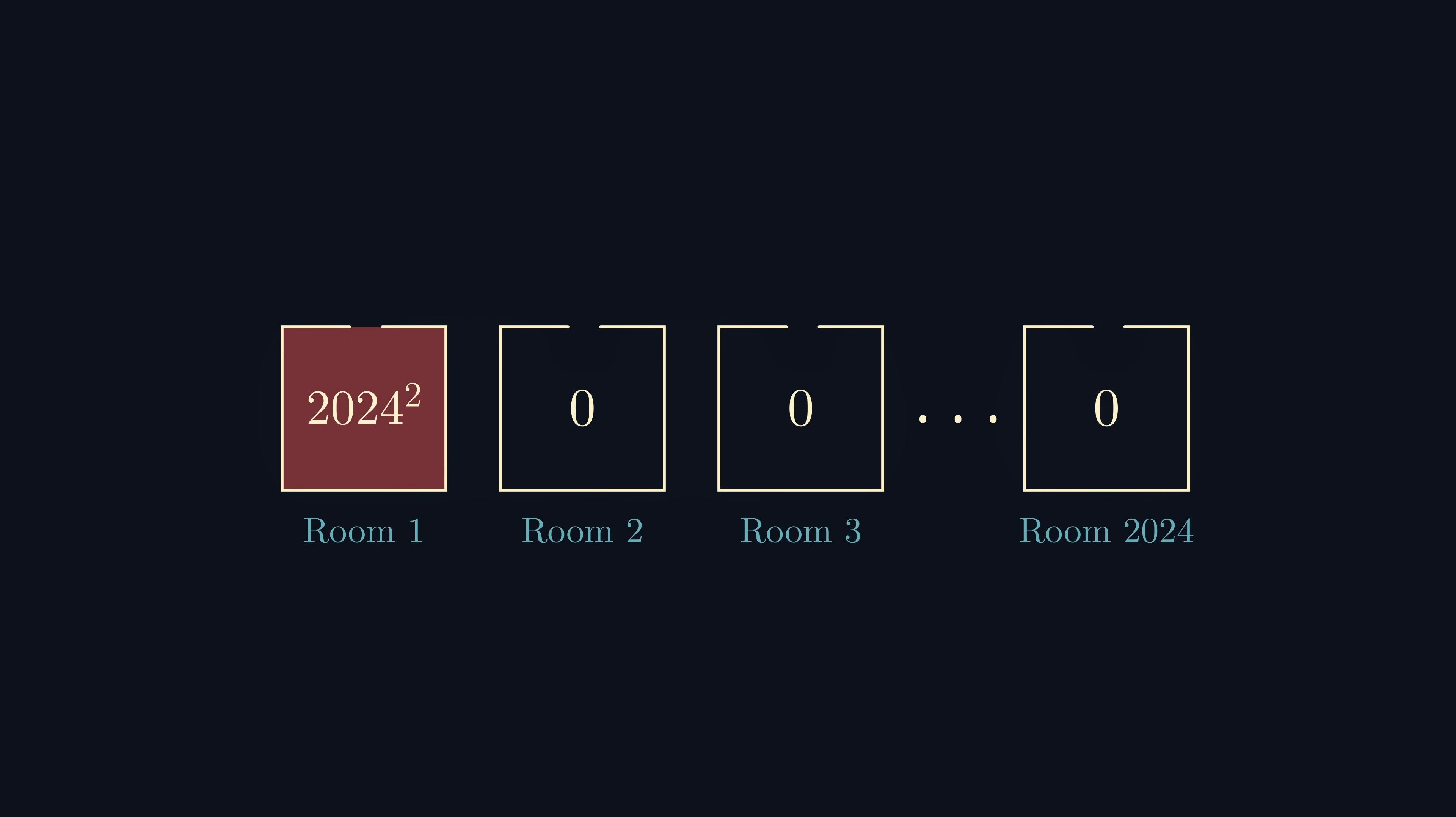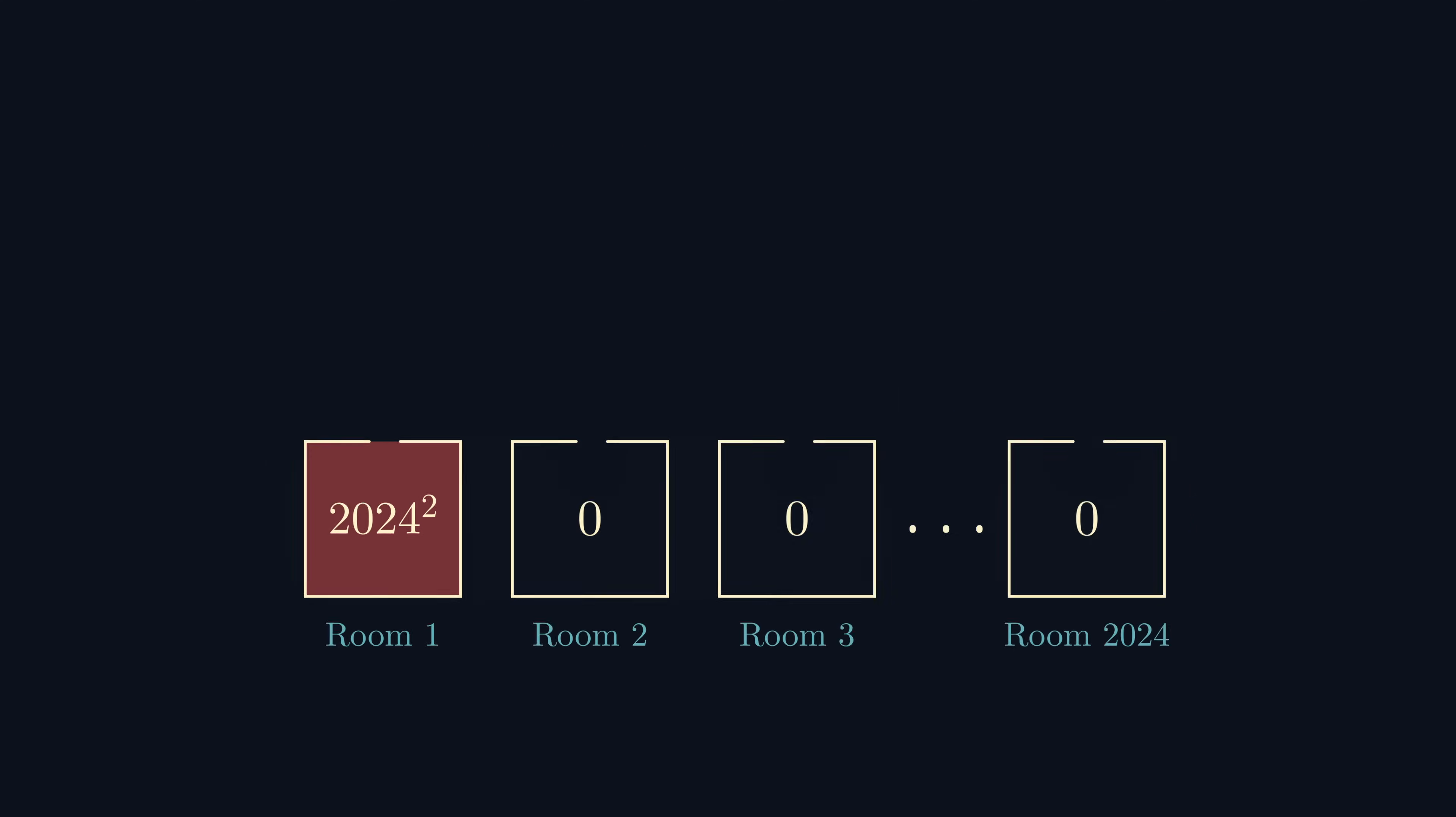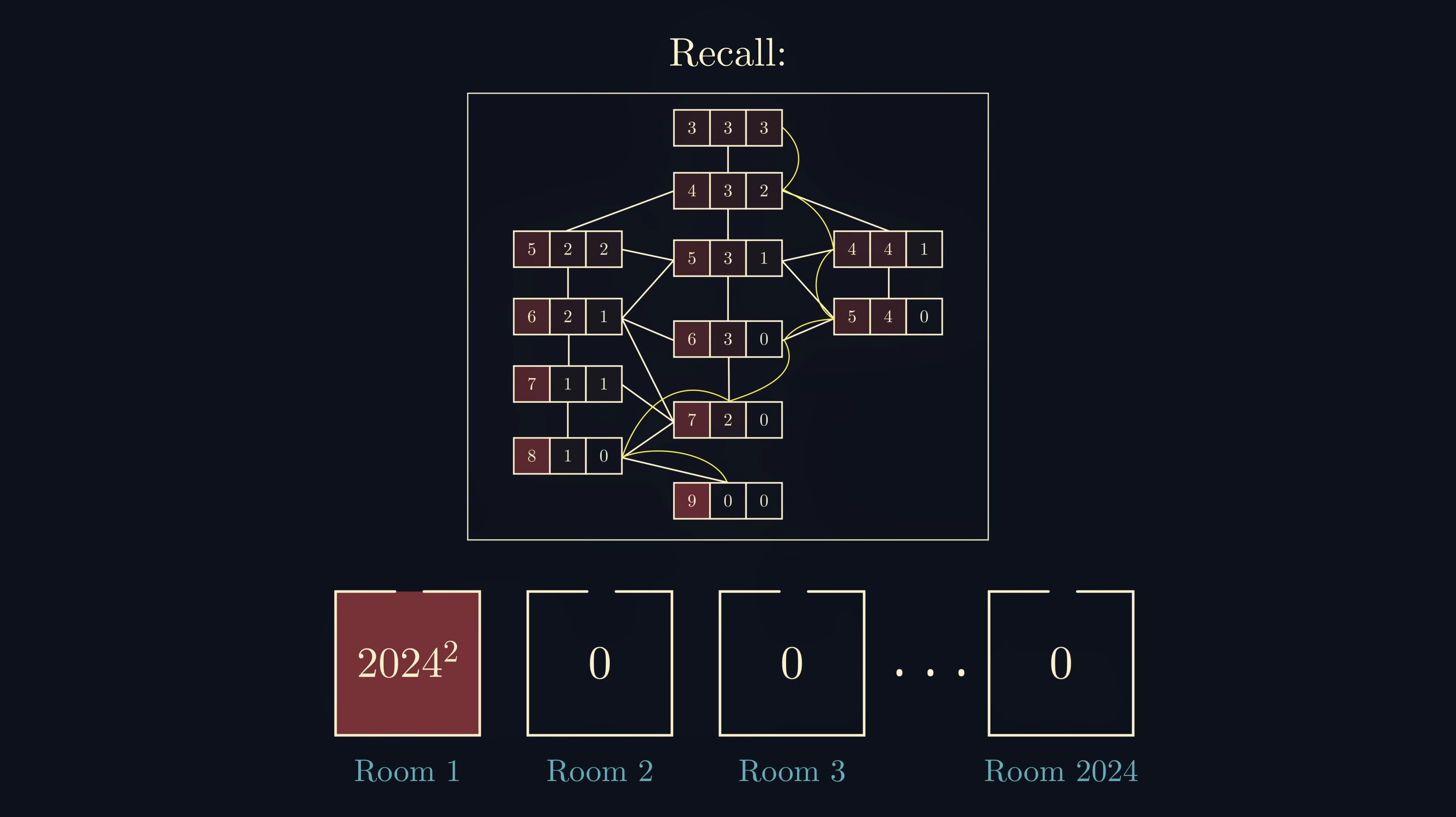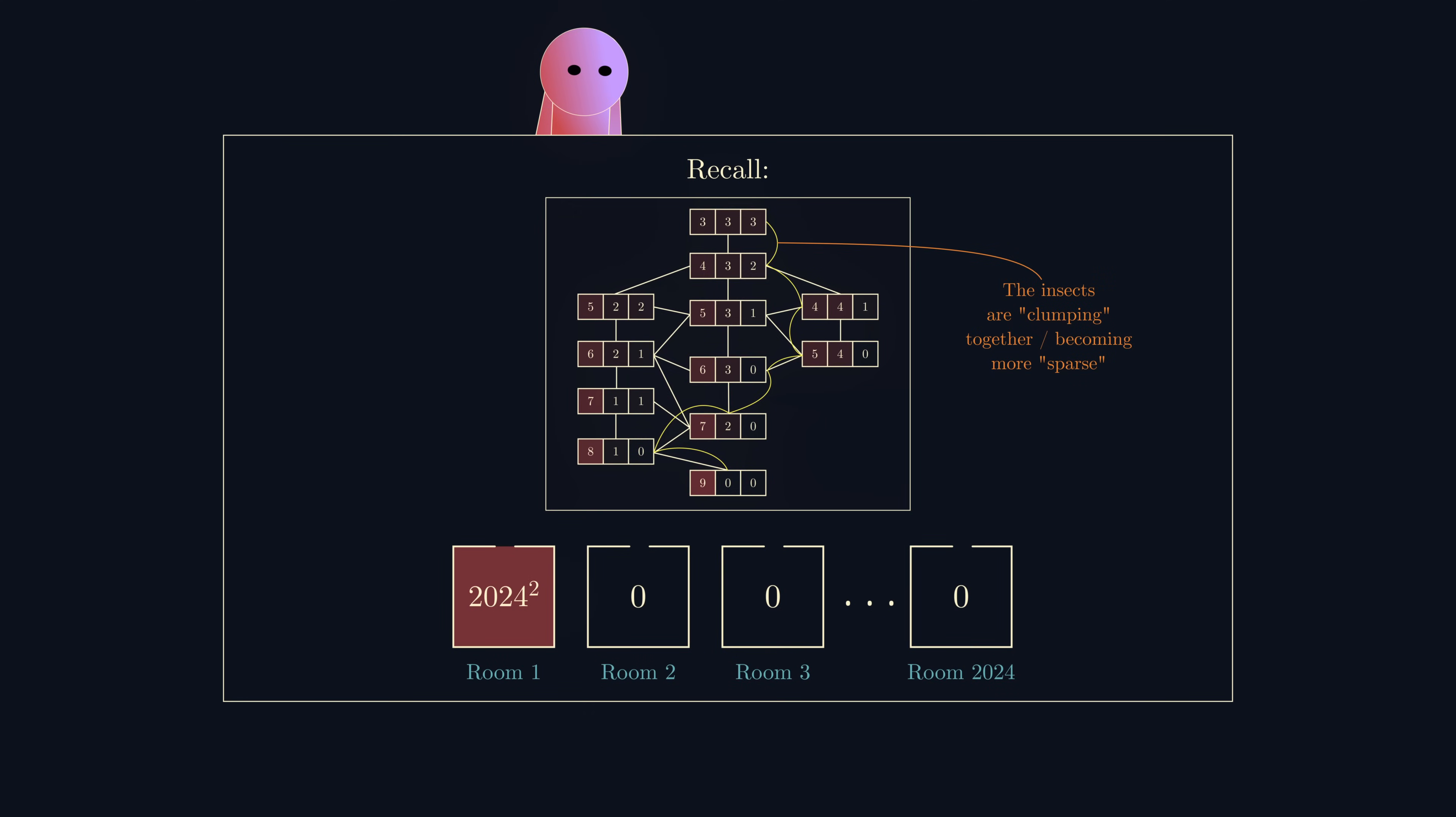If we think about what is actually happening when an insect moves into a room with at least as many insects as their current room, it feels like the insects are sort of clumping together and becoming more spread out. Hmm, if only mathematicians had come up with a way of measuring how spread out a group of numbers are. Oh, wait, they have!